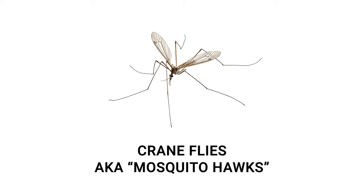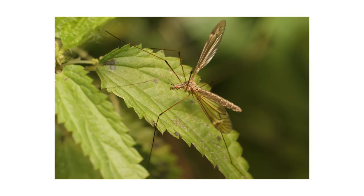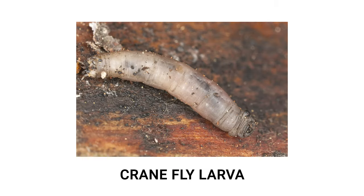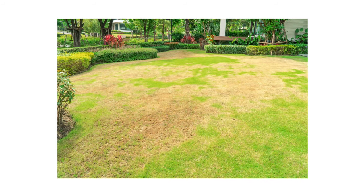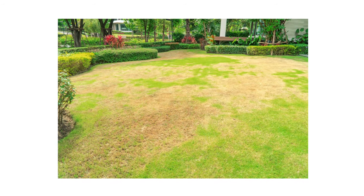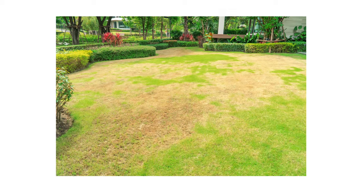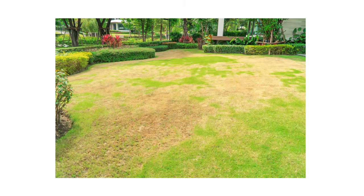Crane flies, also called mosquito hawks, are lanky, long-legged flies. The adults do not need to consume blood to reproduce; however, most species are incapable of eating and die just a few days into maturity. While adult crane flies are harmless, their larvae must feed on grass in order to develop. In heavy infestations, brown patches can form on your lawn quickly and unexpectedly.